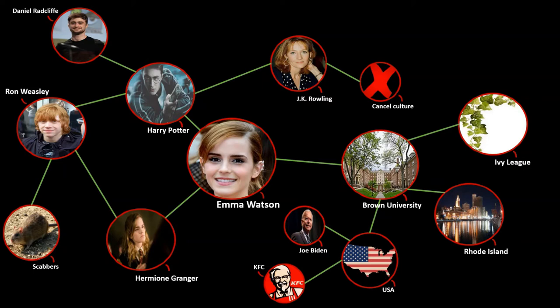But how has Google managed to build this knowledge graph in the first place? It's impossible that Google employed thousands of people to construct it — they wouldn't finish even if they used all the time since the Big Bang. The key idea is that Google uses automated approaches that build a knowledge graph by reading natural language articles such as Wikipedia. By reading millions of documents on the web, Google can automatically extract facts and relationships to construct its knowledge graph.